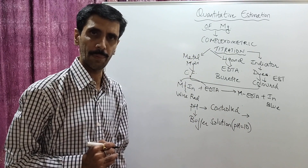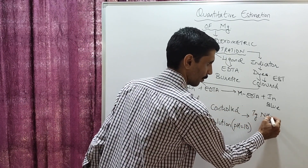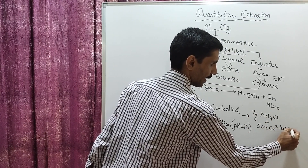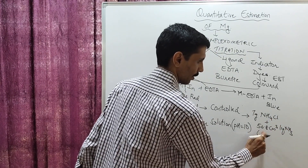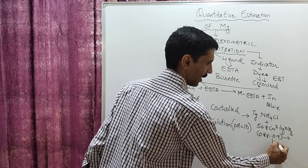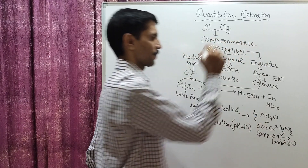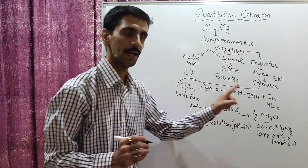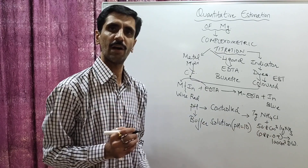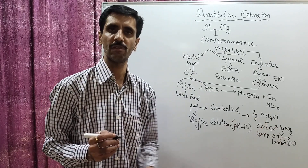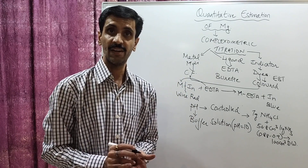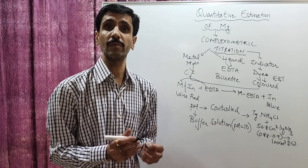For the buffer solution preparation: take 7 grams of ammonium chloride, mix it with 56.8 cm³ of liquor ammonia (specific gravity around 0.8 to 0.9), and dissolve it in 100 cm³ of distilled water. This gives you 100 mL of buffer solution at pH 10, which will be added during the reaction to maintain stability.